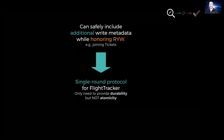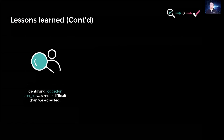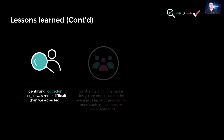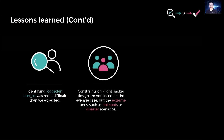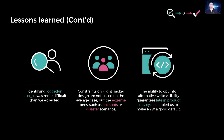We also leverage this property to have a single-round, quorum-based protocol for FlightTracker, as we only need to provide durability but not atomicity. Another early lesson was that identifying a logged-in user ID was actually much more difficult than we expected — some accounts are associated with multiple identities, a user may manage a business account, and request endpoints could be invoked before login or after logout. Constraints on our system design are not based on the average case but the extreme ones, such as hotspots, which largely come from batched internal jobs. Our ability for applications to opt into alternative write visibility guarantees late in the product development cycle, without data schema changes or migrations, really enabled us to make read-your-writes a good default.